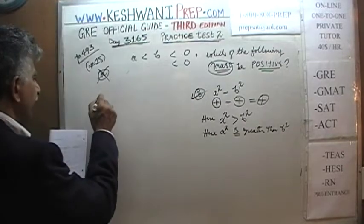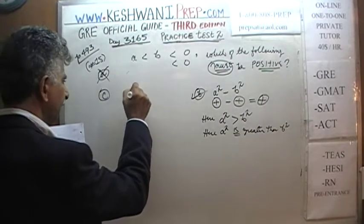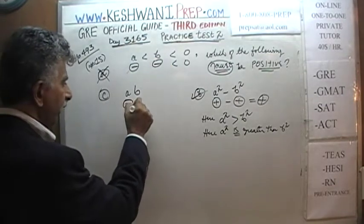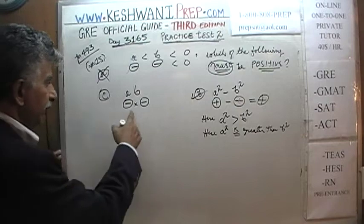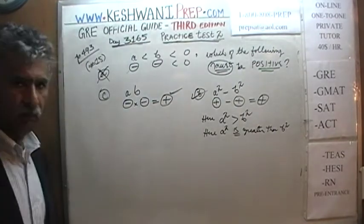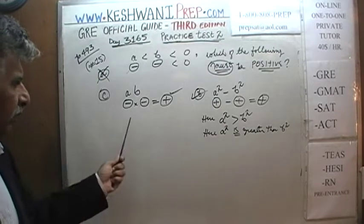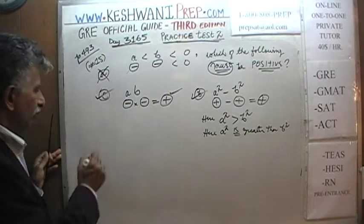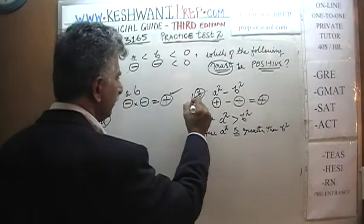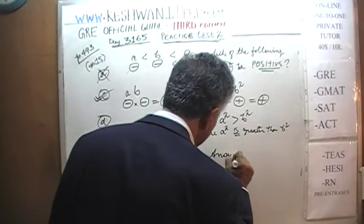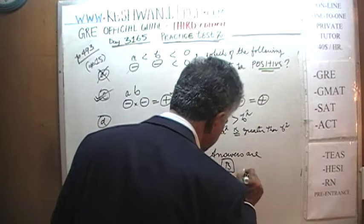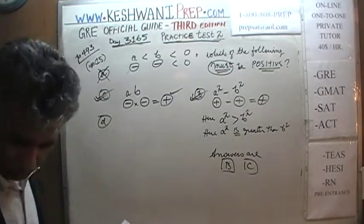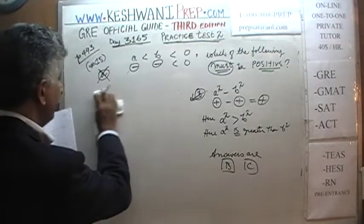Answer choice C says A times B. A is negative and B is negative. When you multiply two negative quantities, negative times negative is of course always positive. We don't even need to plug in numbers — negative 3 times negative 2 is positive 6, obviously. C works.